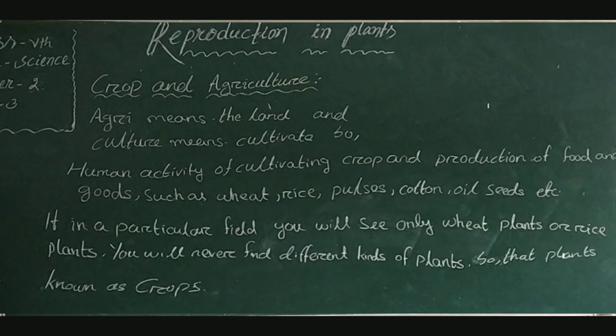You must have seen that plants of the same kind are grown in one field. For example, in a particular field you will see only wheat plants or only rice plants. You will never find a field in which all plants are of different kinds. These plants are known as crops. The particular area in which a crop is grown is called a farm, and the person who works on a farm is known as a farmer.